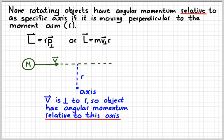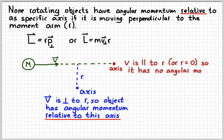If we choose a different axis, like maybe over here, here the velocity is parallel to the moment arm, or you can consider the moment arm to be zero. Either way you'd like to think about it. It's pointed right at the axis. Therefore, it has no angular momentum. So, the angular momentum of something that's not rotating is relative to the axis that we pick or that we care about.